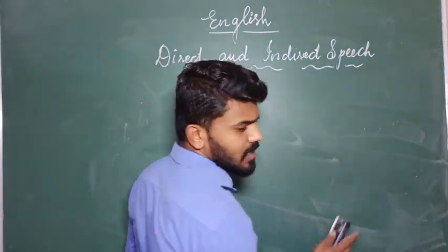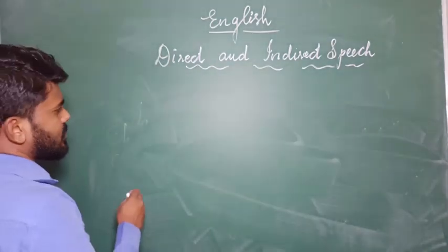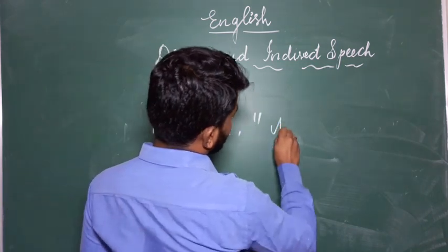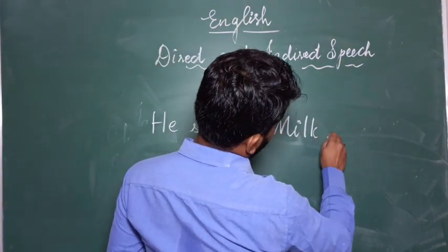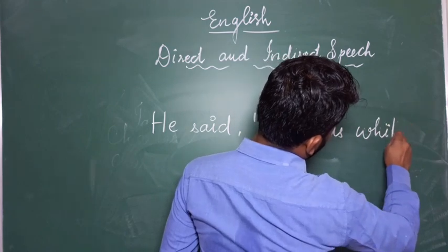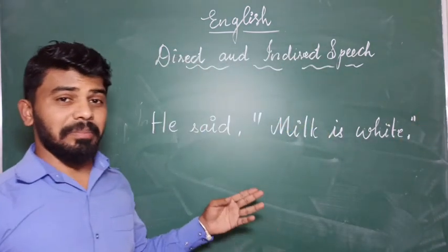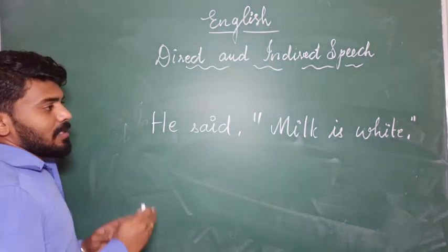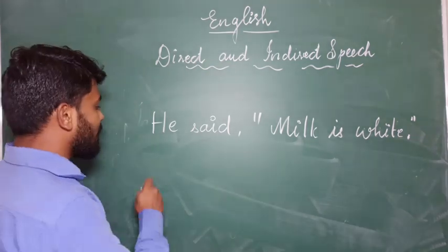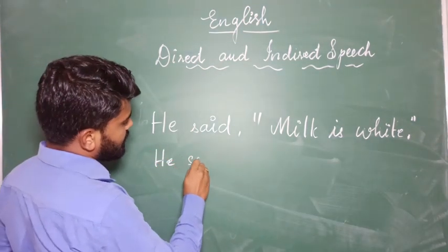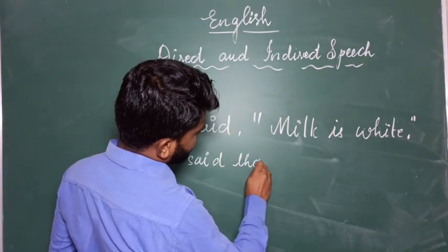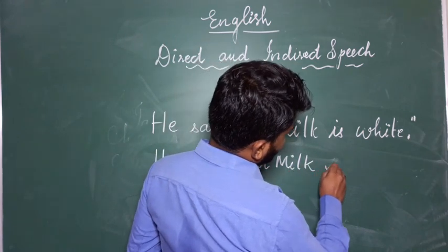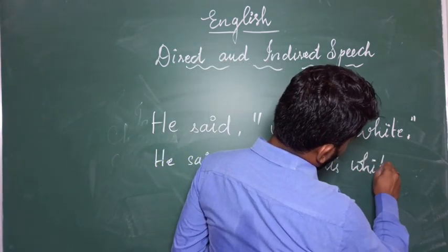This would be the last condition. He said, 'Milk is white.' Here is the sentence — I said it is a condition again. I am going to convert this. He said that milk is white.